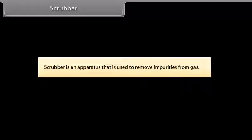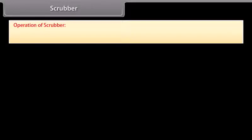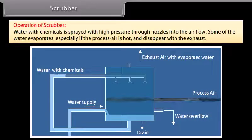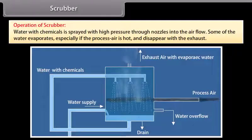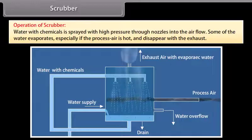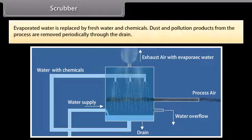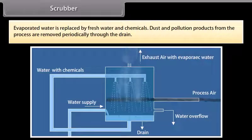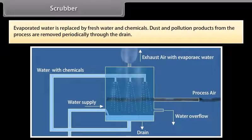Scrubber. A scrubber is an apparatus used to remove impurities from gas. Water with chemicals is sprayed at high pressure through nozzles into the air flow. Some of the water evaporates, especially if the process air is hot, and disappears with the exhaust. Evaporated water is replaced by fresh water and chemicals. Dust and pollution products from the process are removed periodically through the drain.